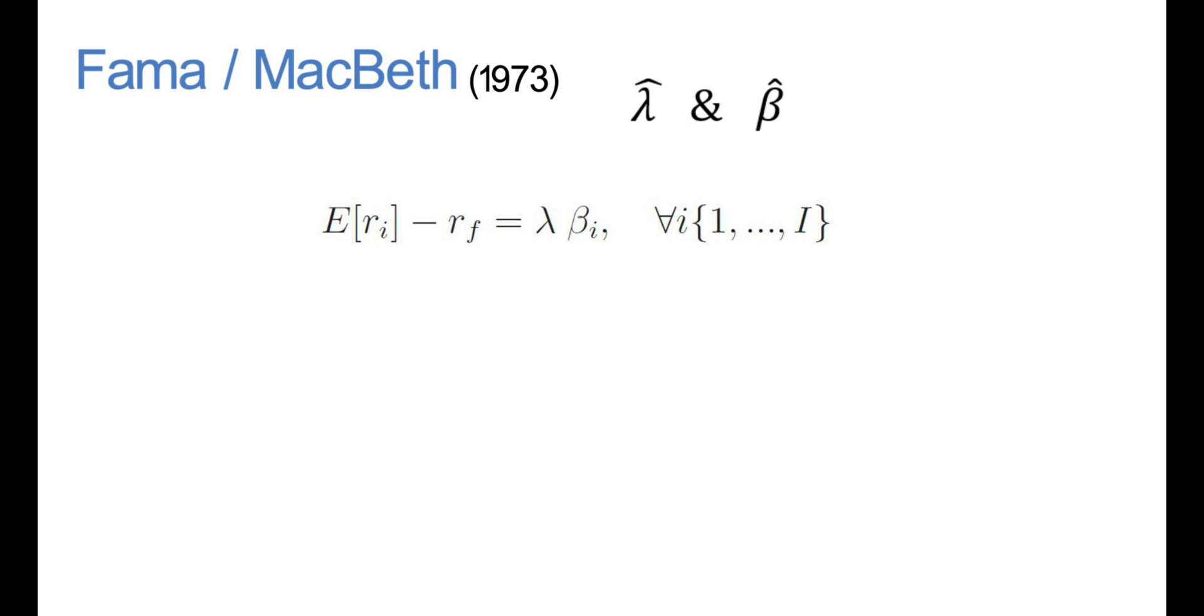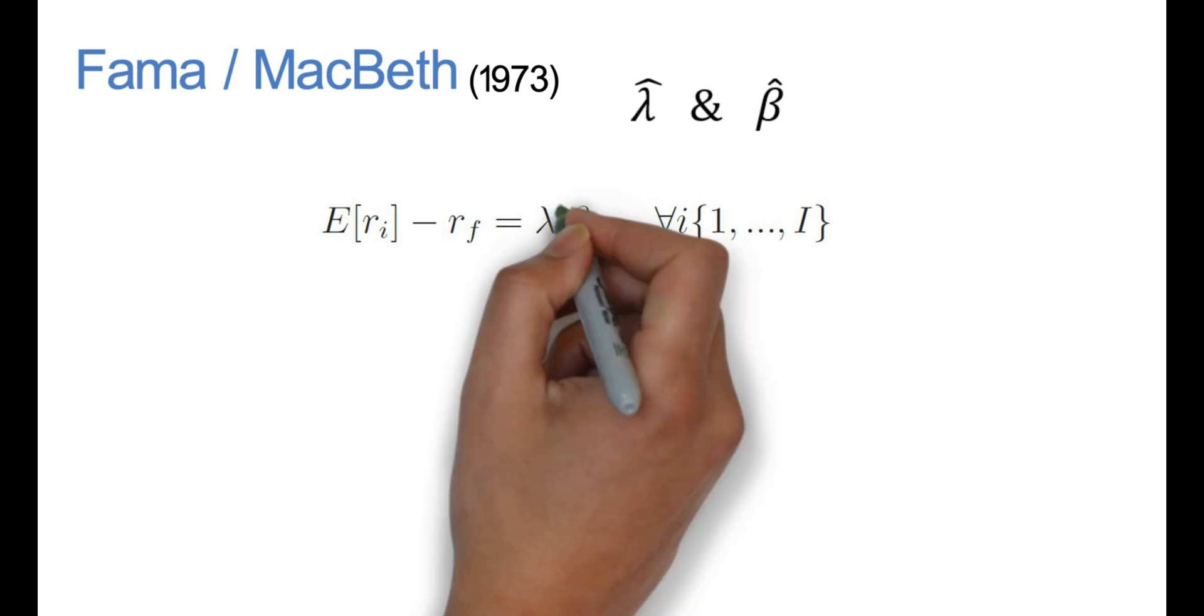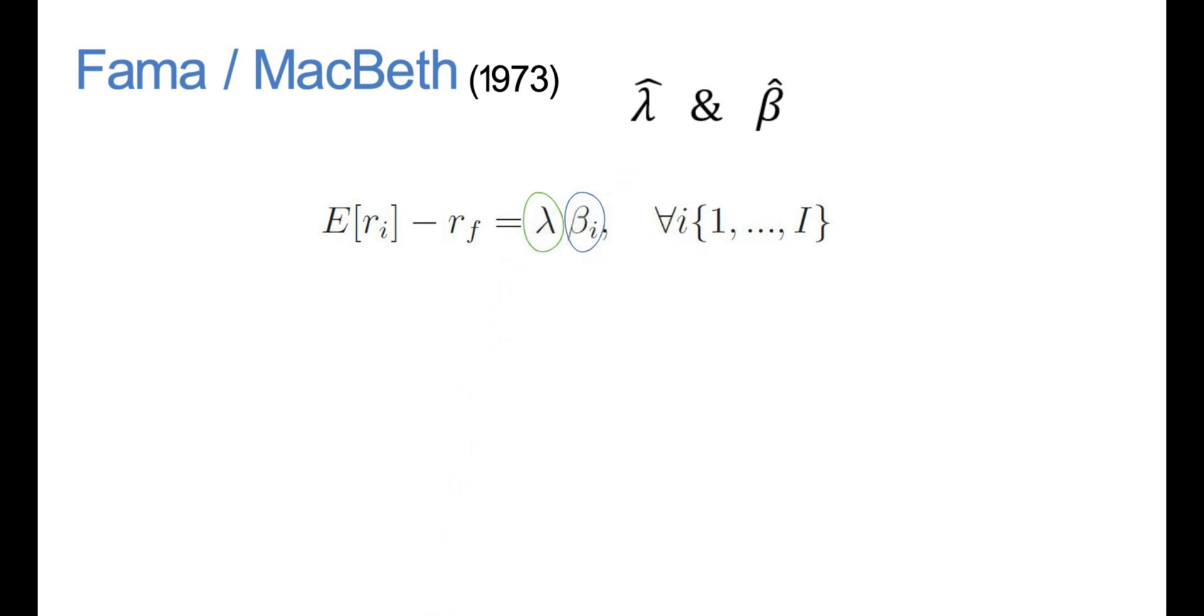i is the number of assets, goes from 1 to capital I, and the task is now how do I estimate the lambda and the beta at the same time?